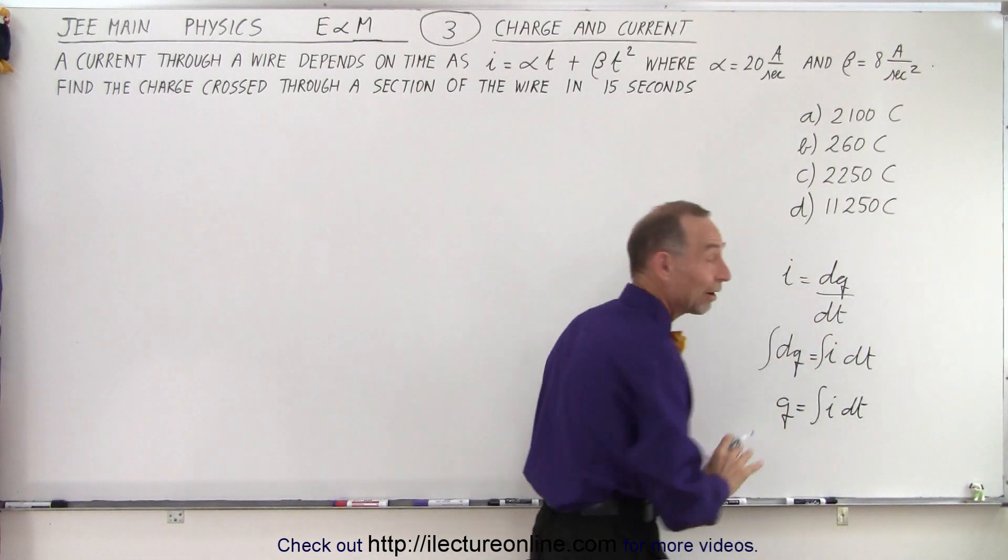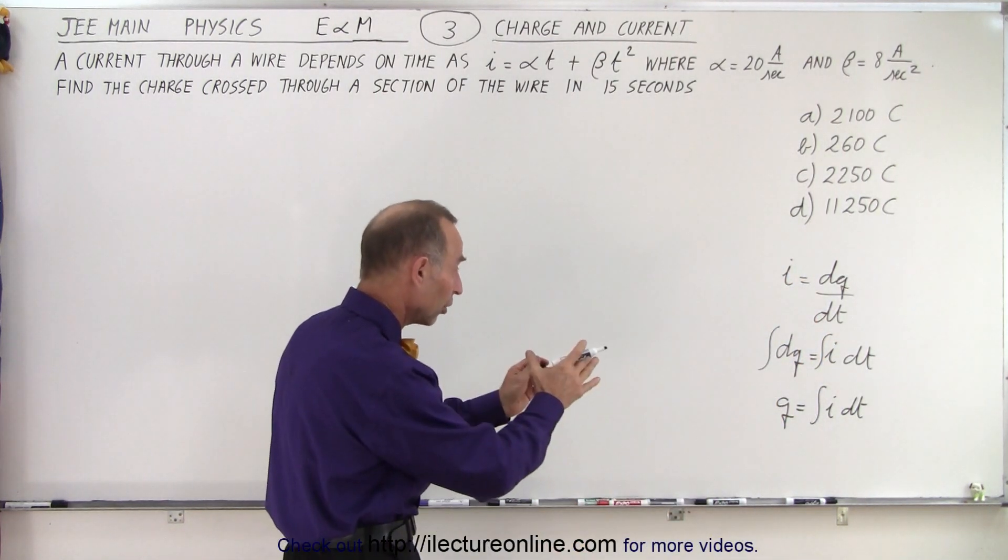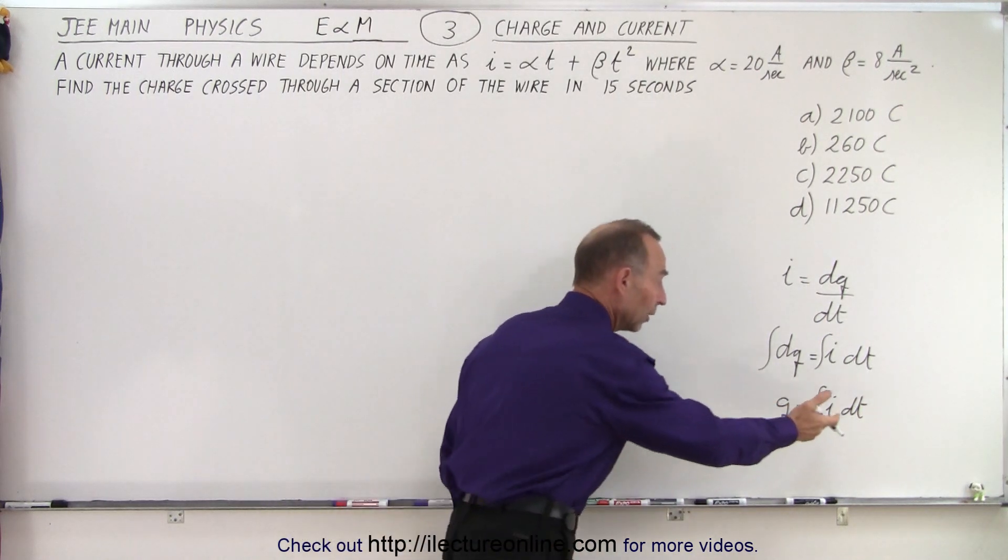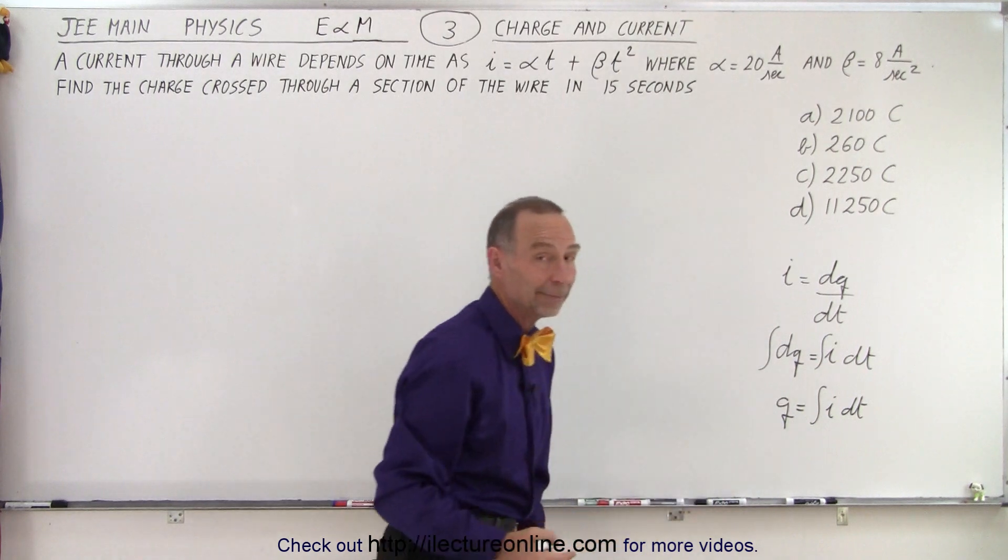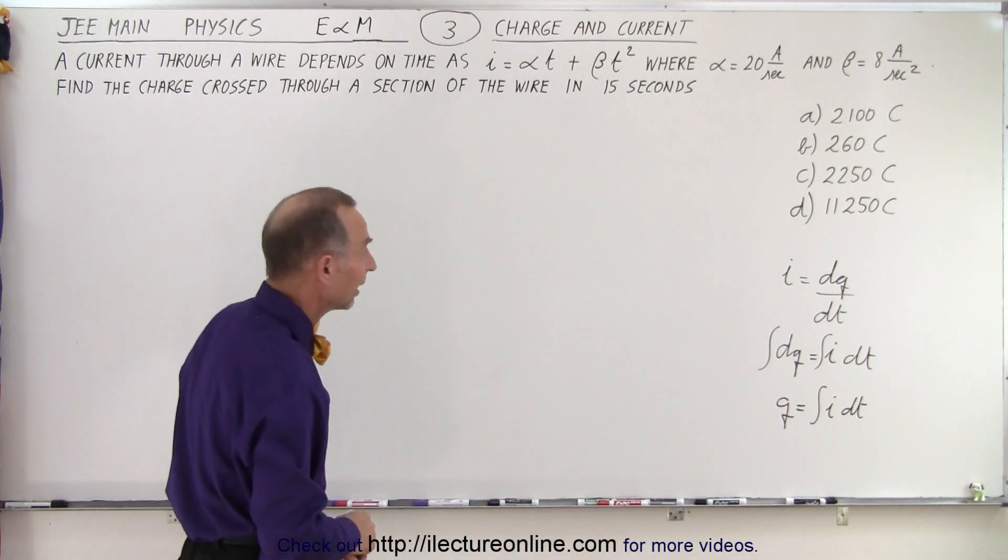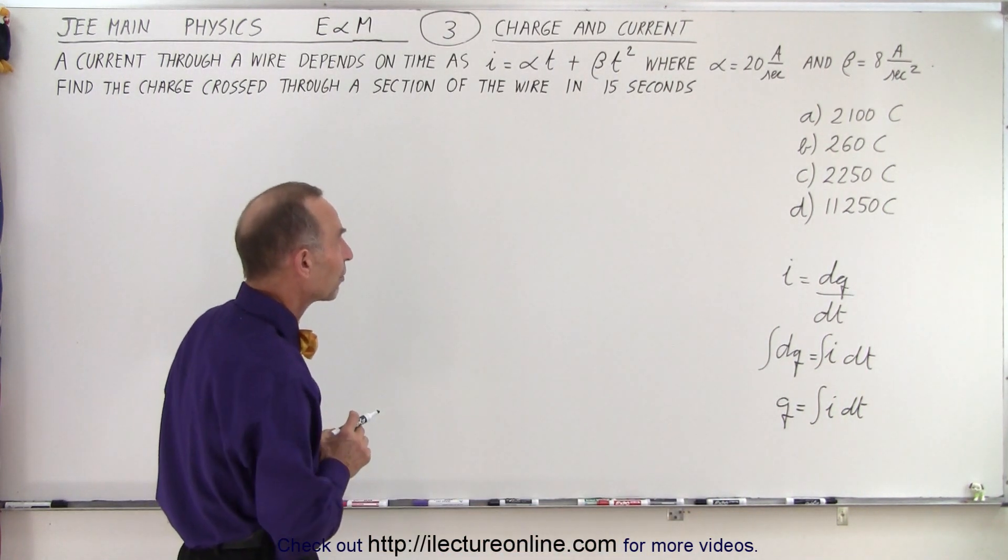That's the concept we have to deal with. In order to find the total charge, we need to know the current, multiply times dt, and integrate it from the initial to the final time. They give us a 15 second interval. So that's how we want to approach that.